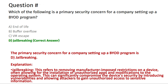The next question: which of the following is a primary security concern for a company setting up a BYOD program? Option A: end of life. Option B: buffer overflow. Option C: VM escape. Option D: jailbreaking.